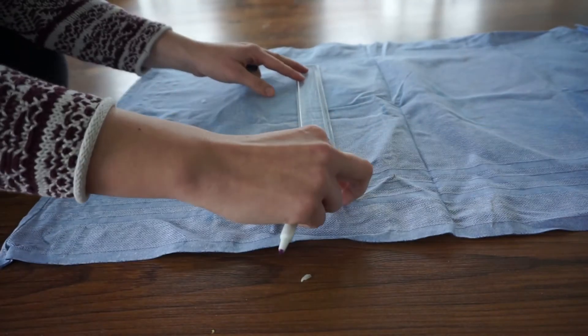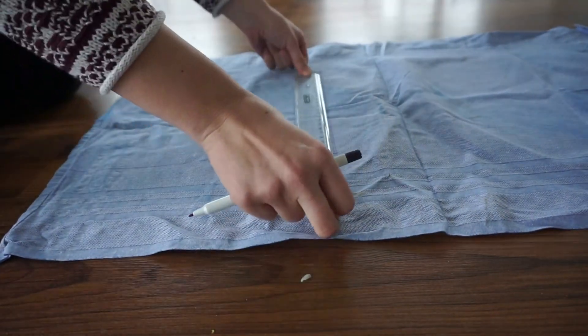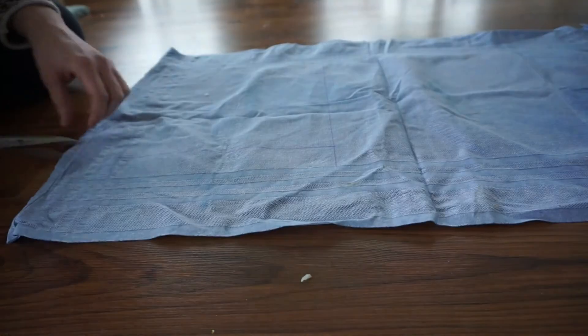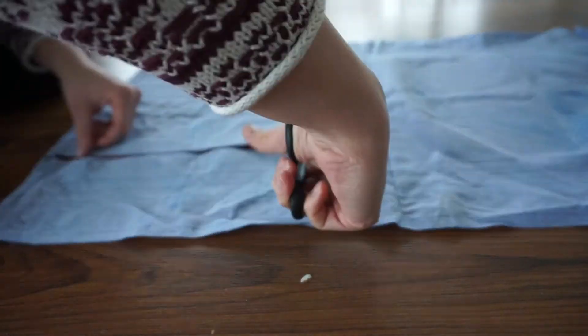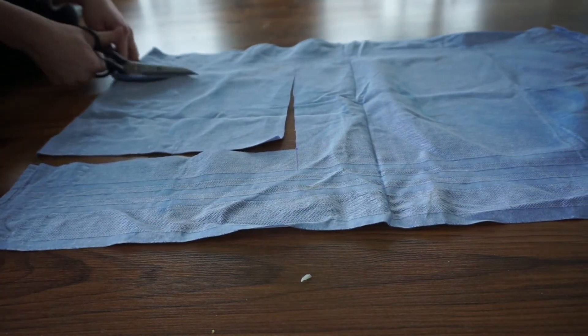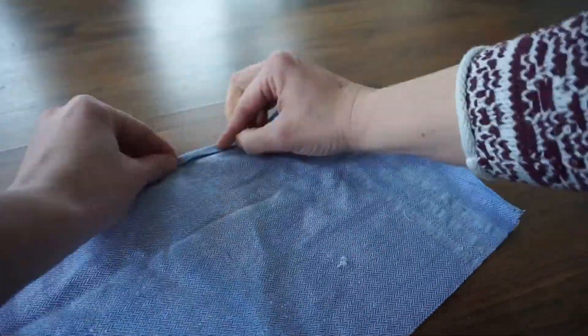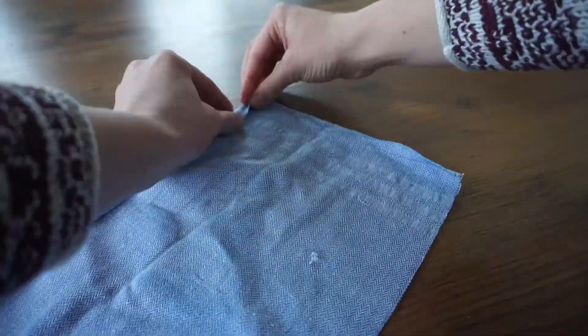Die fünfte Bastelarbeit ist ein Puppengeschirrtuch. Dazu nehme ich ein altes Geschirrtuch von mir, das schon ein paar Flecken hat und nicht mehr schön aussieht. Daraus schneide ich ein Stoffstück zu, das ungefähr die Größe einer A4-Seite hat.